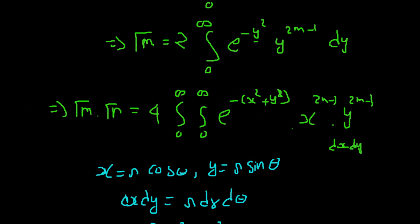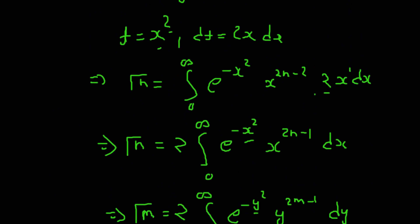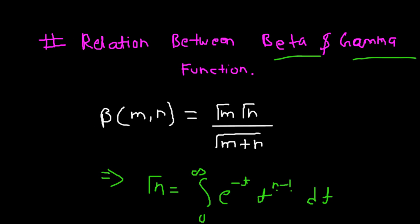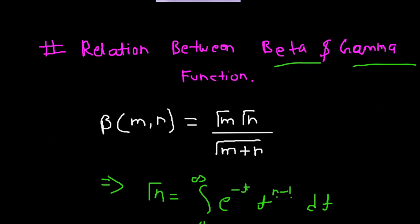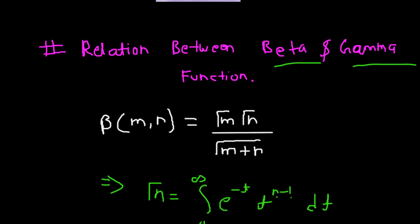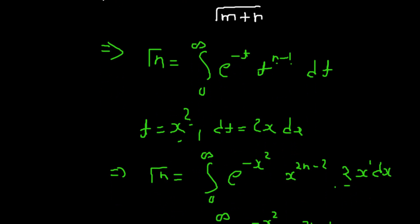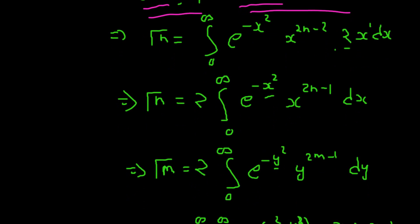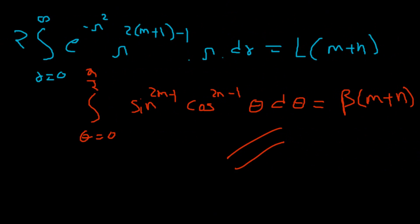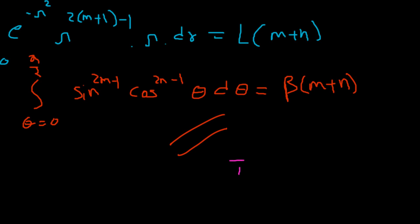Understand this just like a physics derivation — you have to know the steps. The key things are: put gamma(n) as the integral from 0 to infinity of e to the power minus t times t to the power n minus 1 dt, apply the substitutions, and solve through. You get the answer automatically. Thank you for watching.